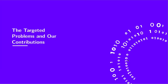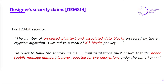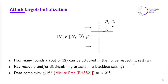Now let's move into the problems we addressed and our contributions. Before that, we start with the security claims made by the ASCON designers. They mention that for 128-bit security, the first condition is that the number of processed plaintext and associated data blocks protected by a single key is limited to at most 2^64 blocks. The second condition is that the nonce should never be repeated for two encryptions. Based on these two conditions we give the target which we analyze in this work, which is mainly the initialization phase of ASCON.